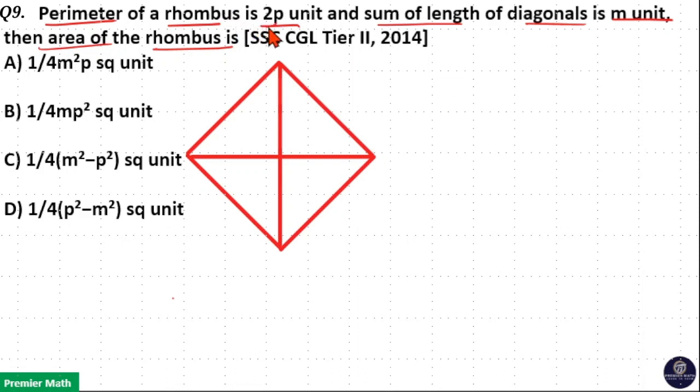Now here, perimeter of rhombus is 2p unit, which means 4 times a is equal to 2p. Then one side is equal to 2p by 4, that is p by 2. 2 goes 2 times in 4, so a is equal to p by 2.